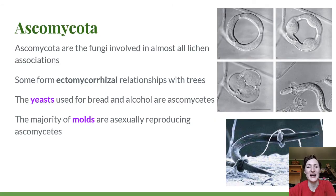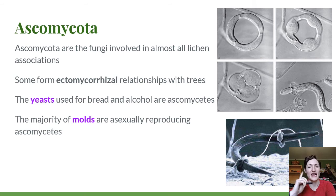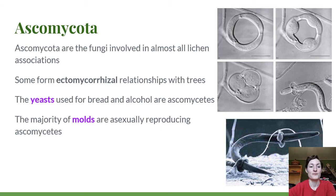Ascomycetes are involved in almost all lichen associations — less than one percent are basidiomycota. Most lichens you'll see are ascomycetes as the mycobiont. Some ascomycota also form ectomycorrhizal relationships with trees. Things like Helvela, which looks like a black, lumpier morel, is one of those ectomycorrhizal ascomycetes.